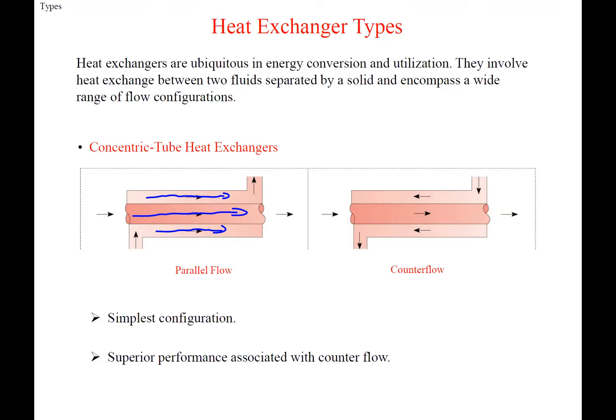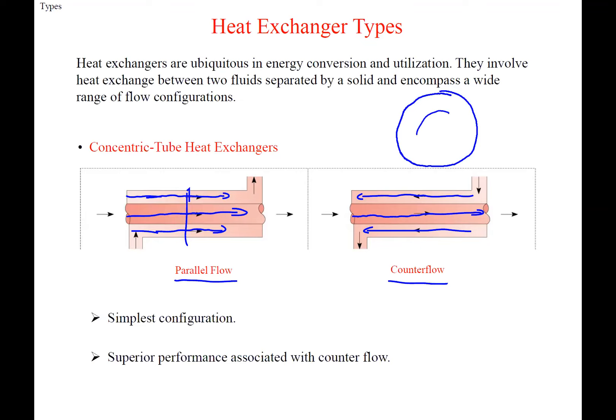Parallel flow is where both fluids enter in the same direction. Counter flow is where one fluid goes left to right and the other goes right to left — opposite flow directions. If we look at a cross-section, you have the outer tube, the inner tube with a wall, the inner flowing fluid in the center, and the outer flowing fluid around the outside.